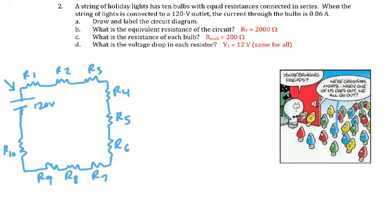It tells you that the current through the bulbs is 0.06 amps. If I was going to take an ammeter and test the current right here, I would find that current is 0.06 amps. It'd be the same if I tested it here or here - anywhere that you tested, this current would be 0.06 amps.